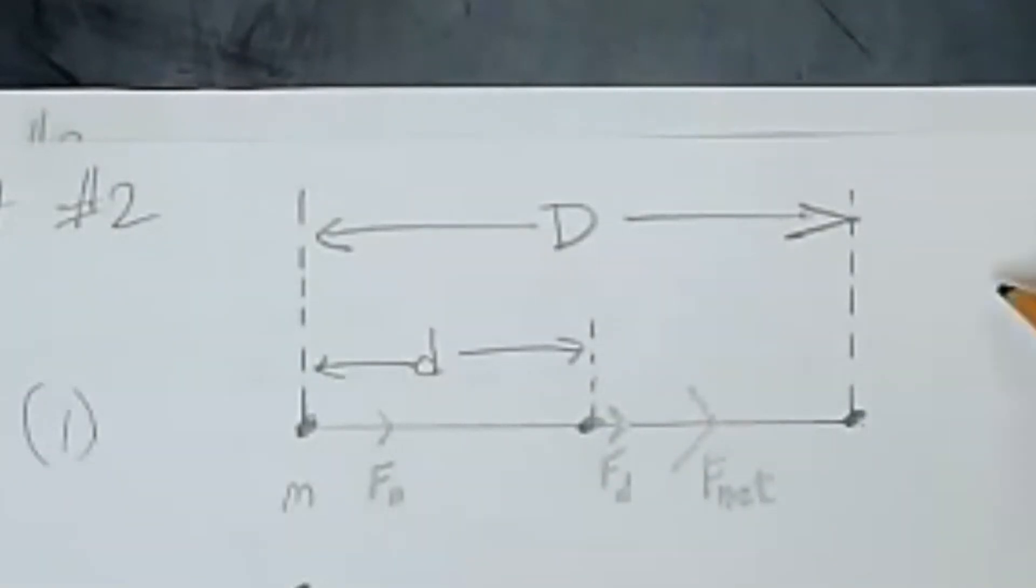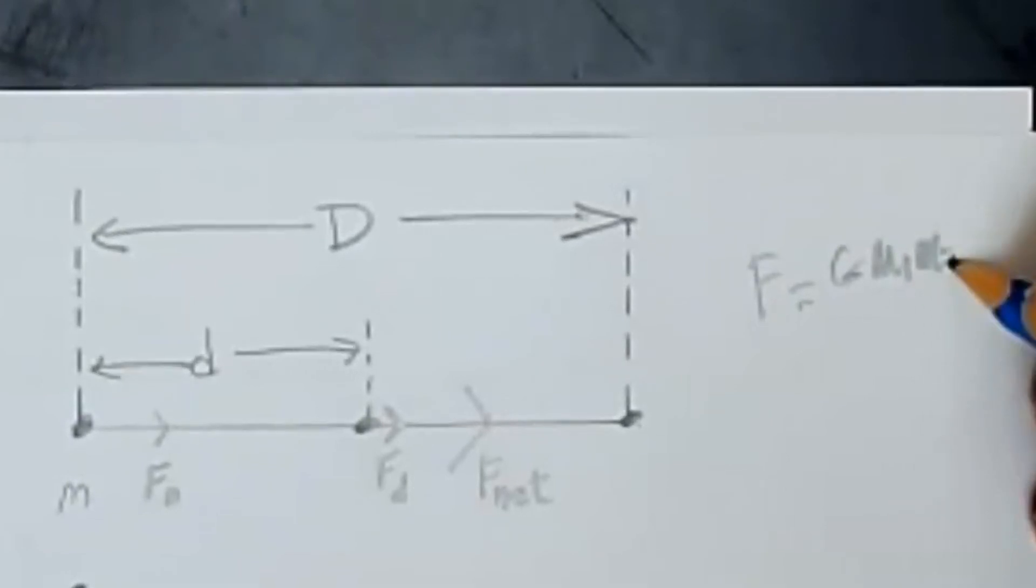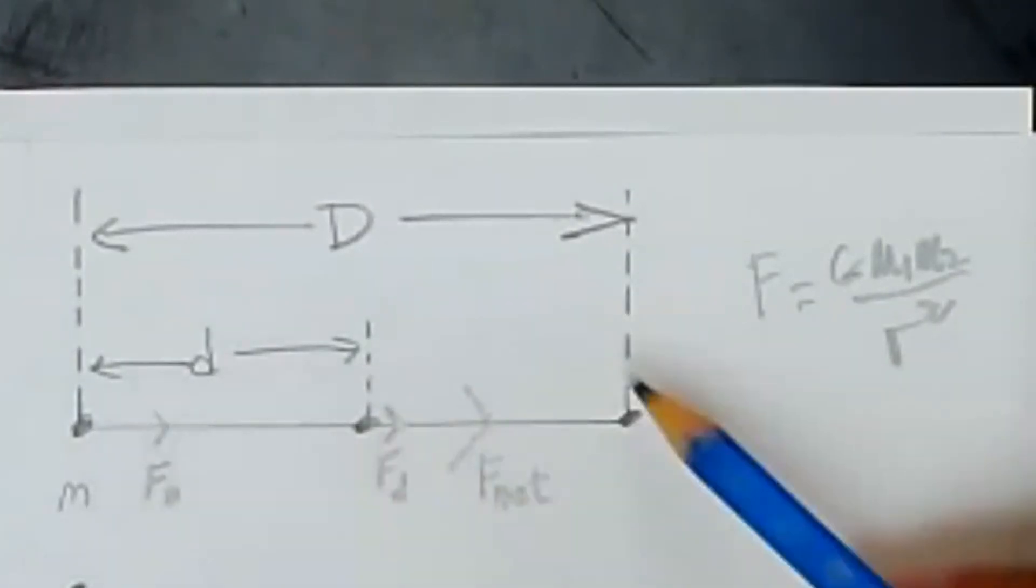We know that Newton's law of universal gravitation follows what's called the inverse square law. So you can see here, little d is a certain distance, and big D is twice that distance.